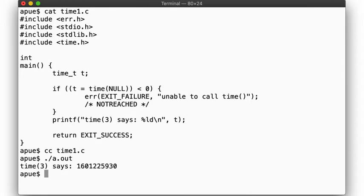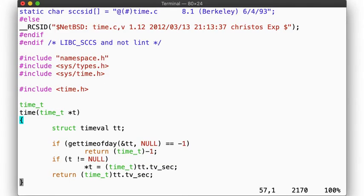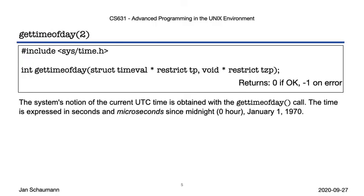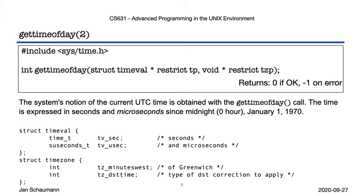But wait — time is a library function, not a system call. So where does time itself actually get the time from? Easy enough to find out: use the source. Here we have the implementation of the time function in libc, and it looks like all it does is call gettimeofday. Like before, we get back what the system thinks the current time is as seconds and microseconds elapsed since the epoch. The timeval struct has two fields, and the second argument, the struct timezone, is only provided for source compatibility and is ignored or set to zero by gettimeofday.